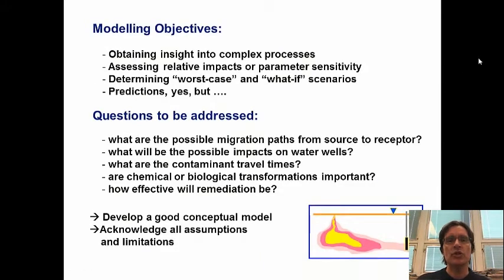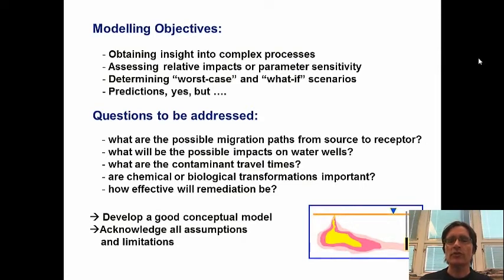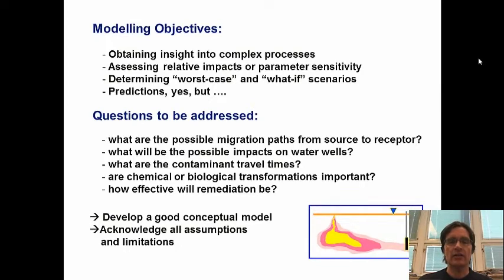So what are our modeling objectives — what questions do we need to answer when developing a model? The most important use of a model is to obtain insight into complex processes. Another very useful application is to assess relative impacts or parameter sensitivity: comparing one case to another, and looking at what parameters are most important to our system. Modeling is very good for determining worst-case and what-if scenarios. It's useful for making predictions, but we shouldn't rely too heavily on absolute predictions — more on gaining insight in a comparative way.